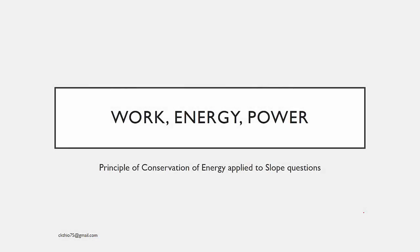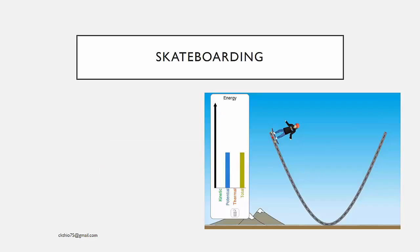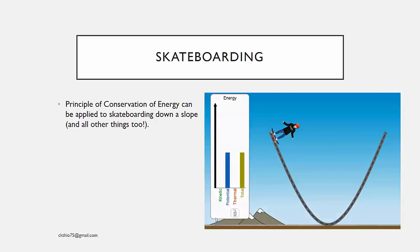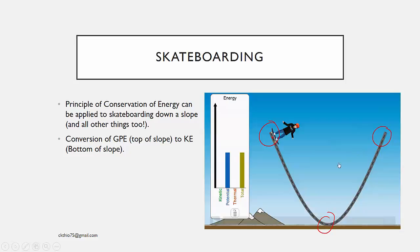In this lesson, we are going to apply the principle of conservation of energy to slope-type questions. Conservation of energy can be applied to skateboarding down a slope — it is a conversion of gravitational potential energy at the top of the slope to kinetic energy at the bottom, and back to gravitational potential energy at the top, just like this shows.